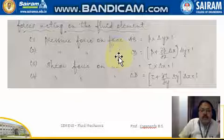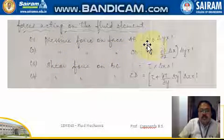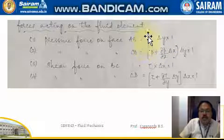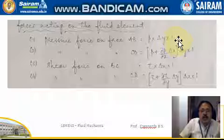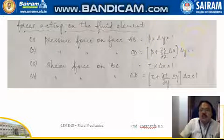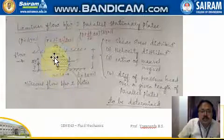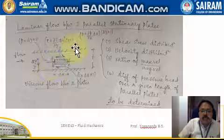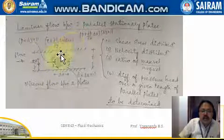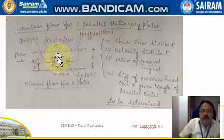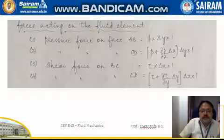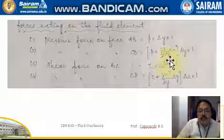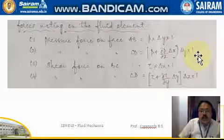The forces acting on the fluid element are written as follows. Pressure force on face AB: since force equals pressure times area, and we take unit length in the third direction, the area of face AB is delta y times one. So the pressure force on AB is P times delta y. Similarly, the pressure force on the opposite face CD is (P plus (∂P/∂x)dx) times delta y times one.